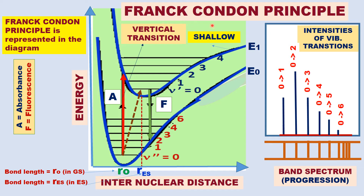The Frank-Condon Principle explains the intensities of vibrational-electronic transitions. We have transitions 0→1, 0→2, 0→3, and so on. All these transitions — 0→1, 0→2, 0→3 — are quantum mechanically allowed.